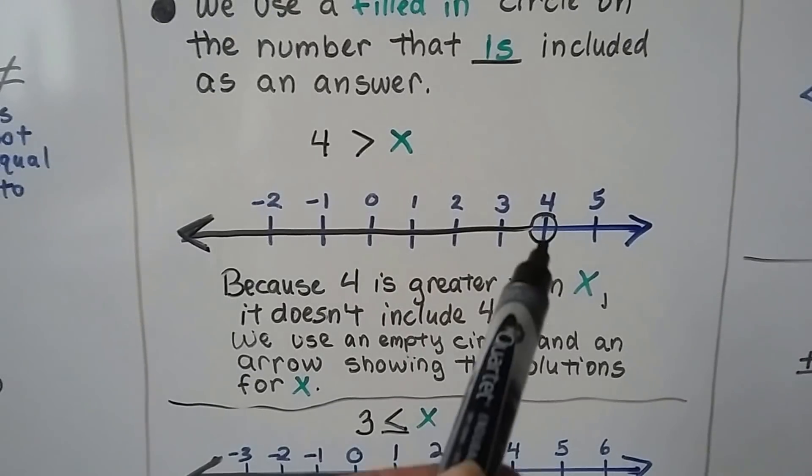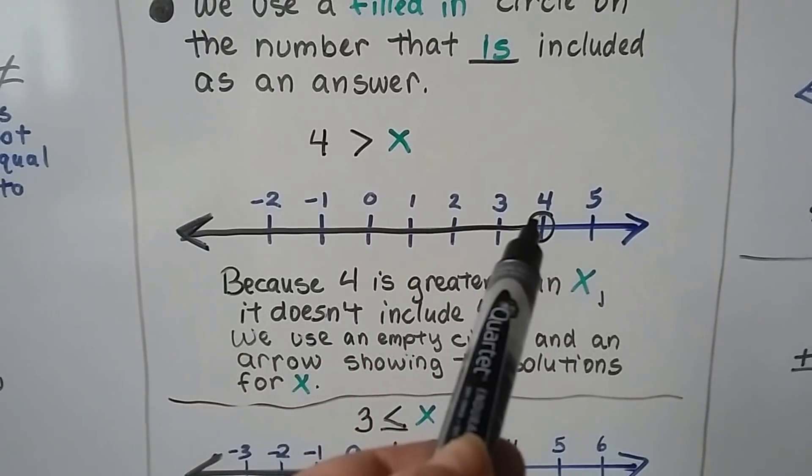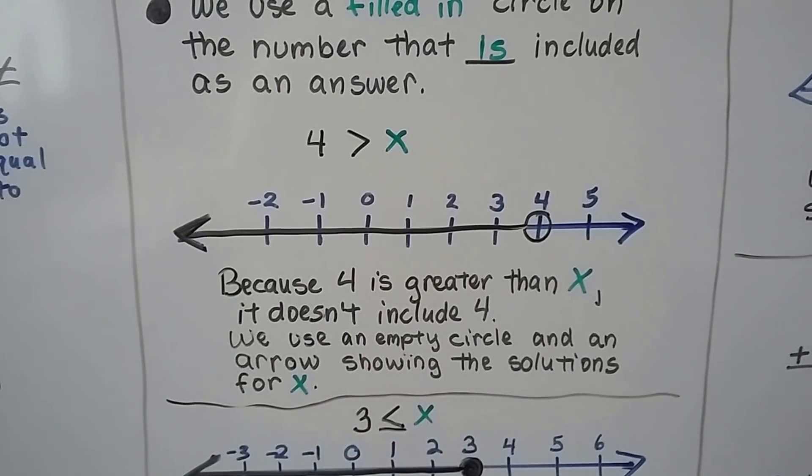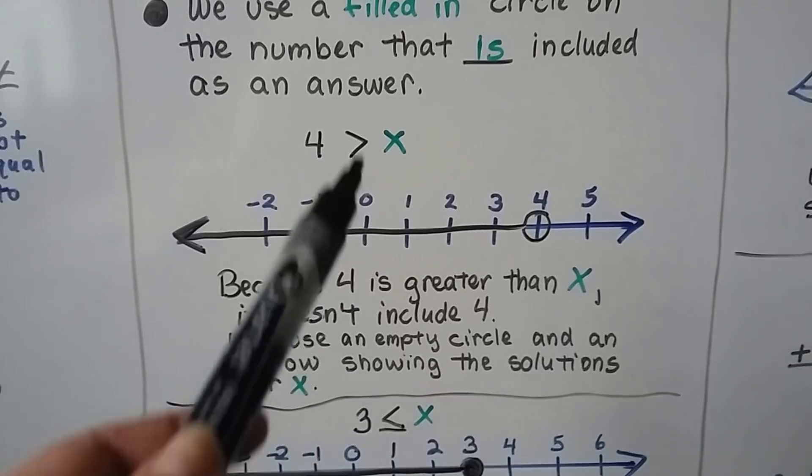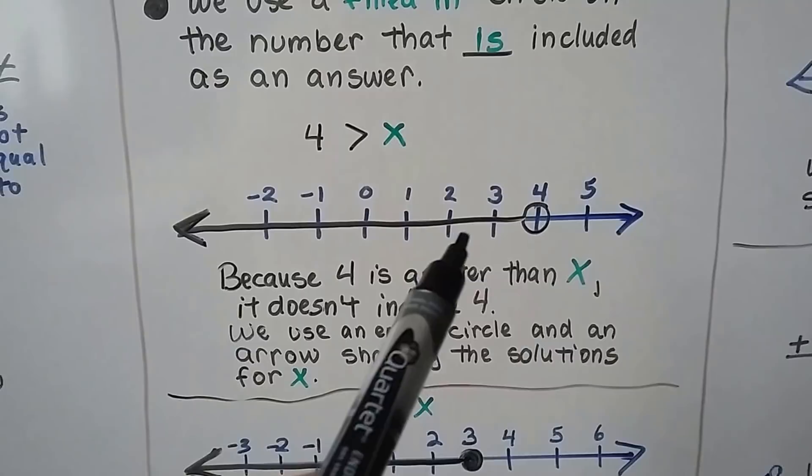And then we use an arrow line going in the direction that x could be. So it's going to go smaller because x is smaller than it. 4 is greater. Do you see how that happened? That means x is smaller than 4. If 4 is greater than x, then x is smaller than 4.